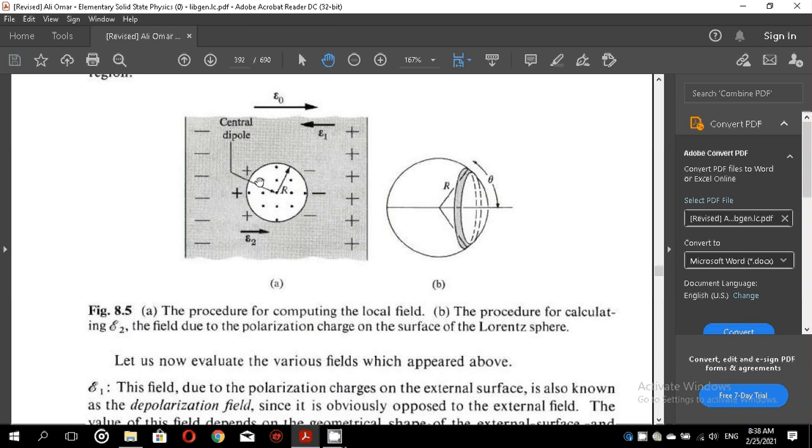So here is a sphere of a certain solid placed in an external electric field. This is the applied field between E1 and D naught between these two polar surfaces. Then we have the field E1, which is the field between this side of the sphere and this side of the sphere on the surface. E2 is the field due to this polarization. Similarly, E3 is the field which is not shown here, but it is very clear. You must also concentrate on figure B as well. In figure A, the procedure for computing the local field. In figure B, the procedure for calculating E2, the field due to the polarization charges on the surface of the Lorentz sphere.